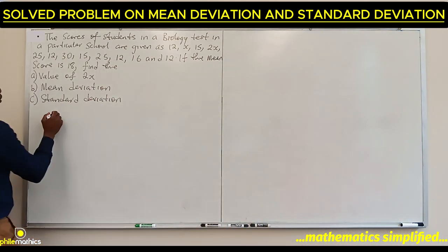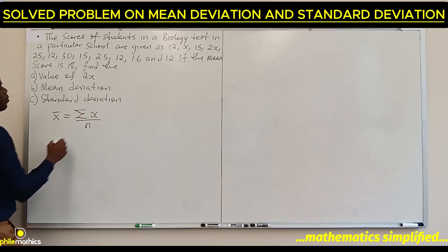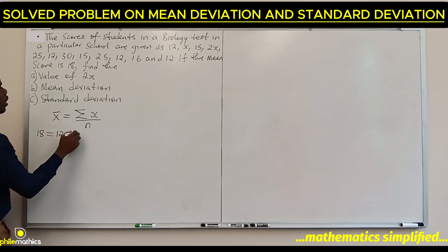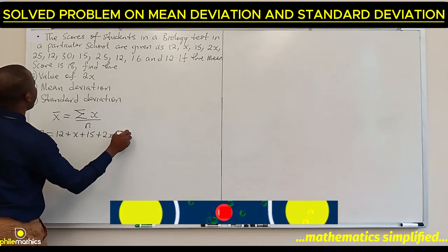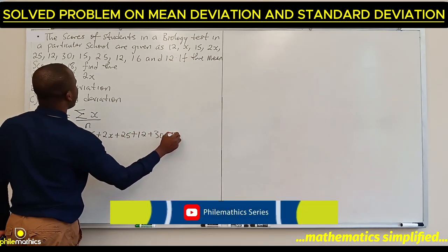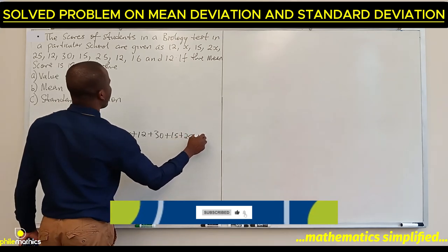The mean formula says summation of fx over the frequency. We're given the mean as 18. The values are 12 plus x plus 15 plus 2x plus 25 plus 12 plus 30 plus 15 plus 25 plus 12 plus 16 plus 12.